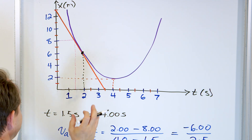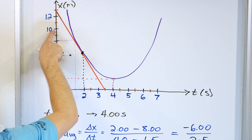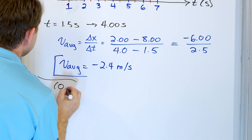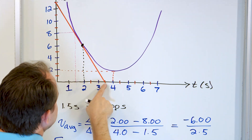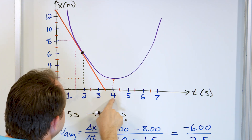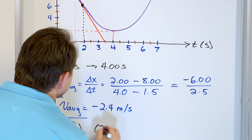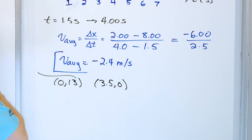We have two points on the line. The first point is (0, 13), and another point on the line is (3.5, 0) — between 3 and 4 on the time axis. So we have to find the slope of the line between these two points.